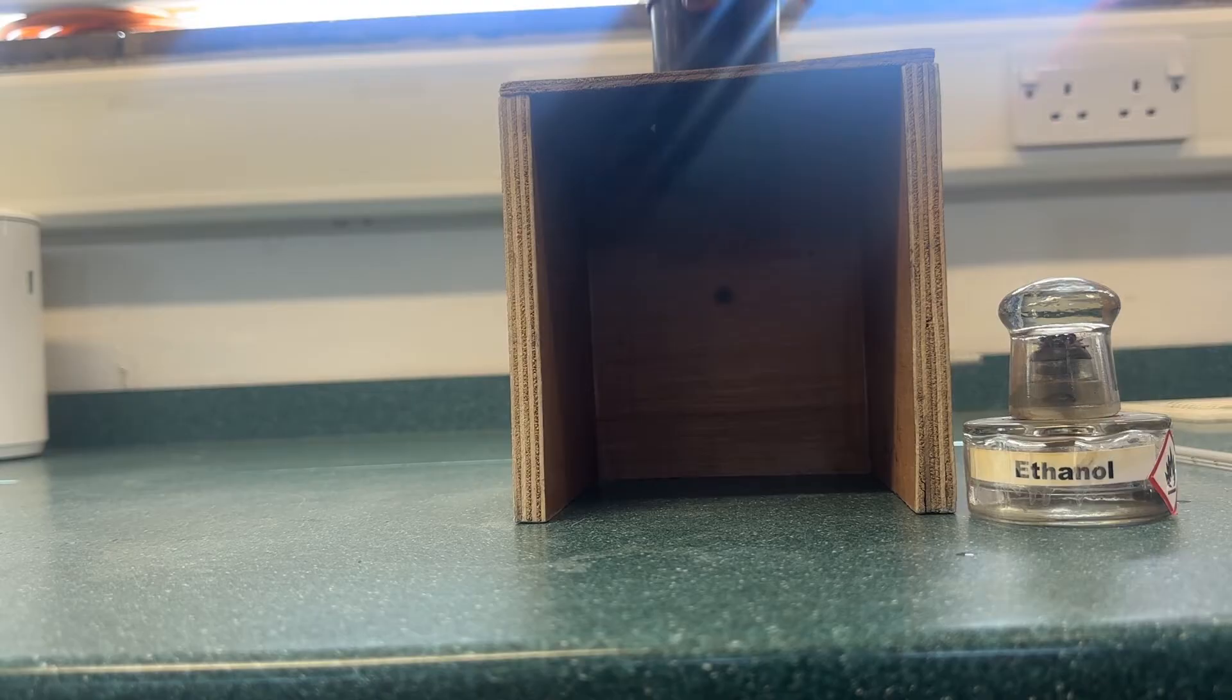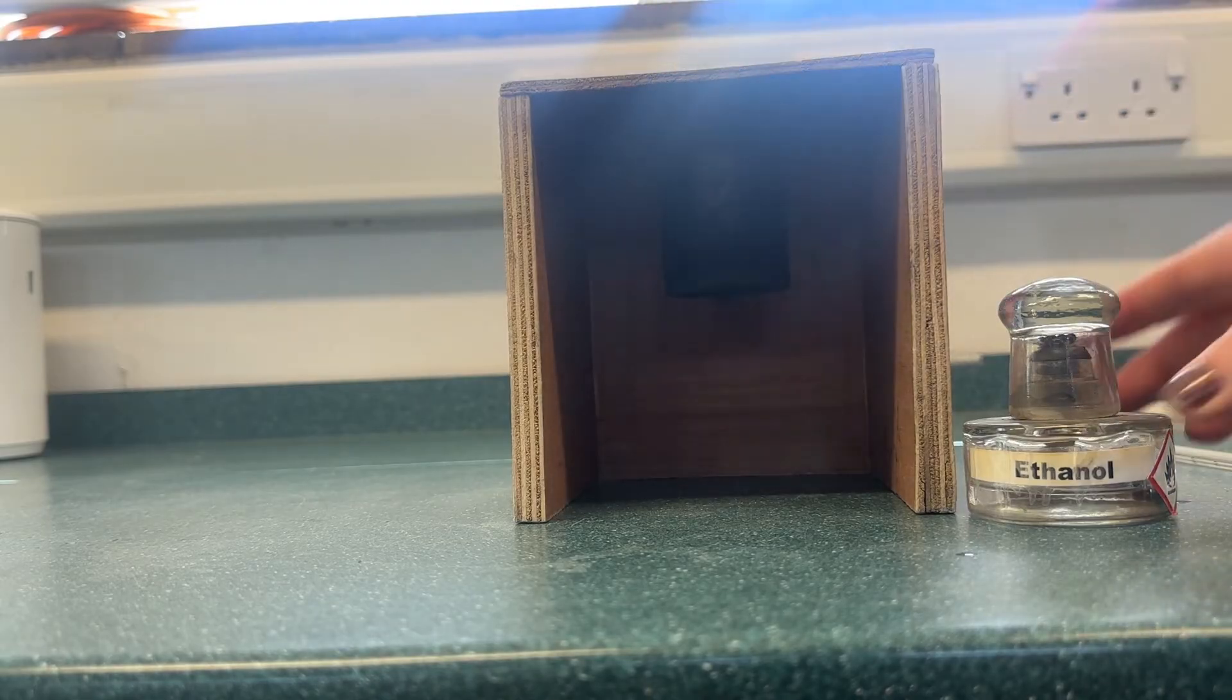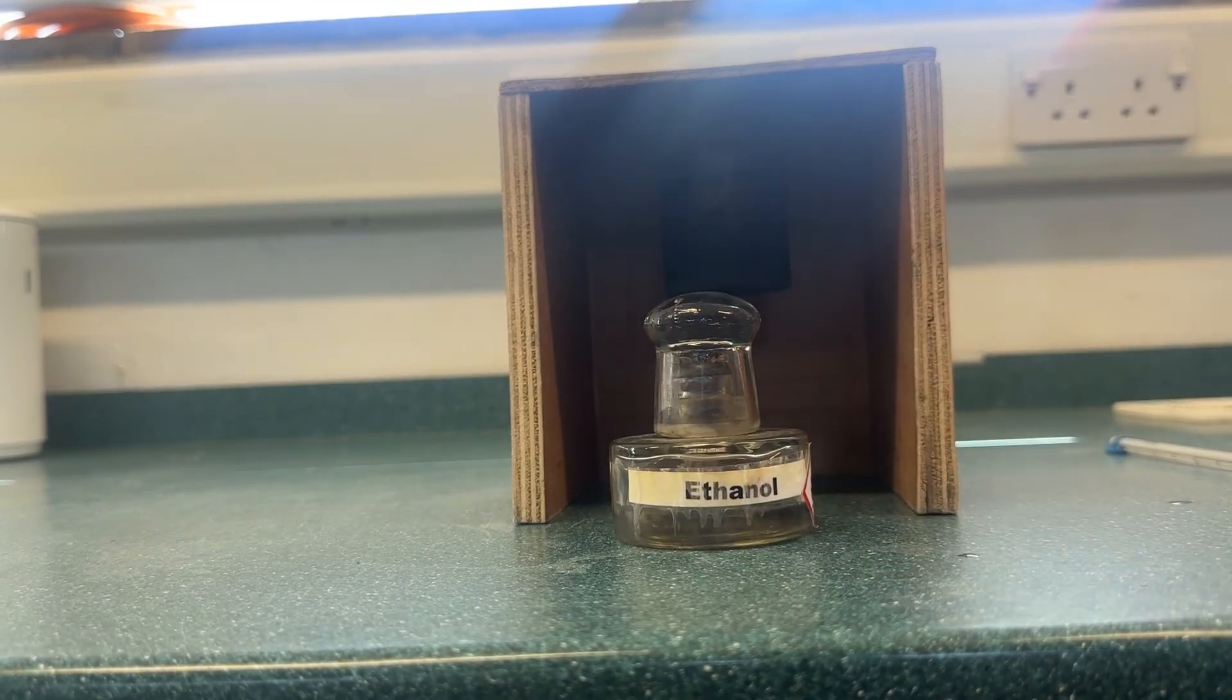Place the beaker back into the draft shield. The draft shield has three sides. This is to prevent heat escaping.